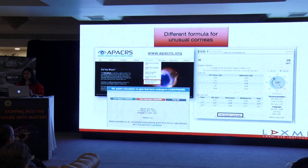The story is slightly different for unusual corneas, and it is always better to use special formulas with a direct measurement of the posterior corneal astigmatism instead of the predicted one.